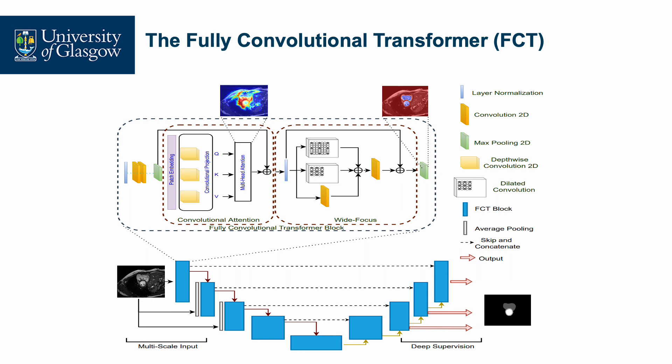FCT takes an input 3D scan, for which we then sample overlapping 2D patches from each 3D slice. We also use a pyramid-style input, as well as employ deep supervision, which boosts performance. Each FCT layer starts with layer normalization, convolutions, and max-pool operations with small kernel size.